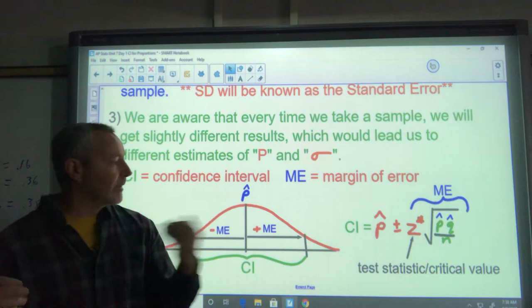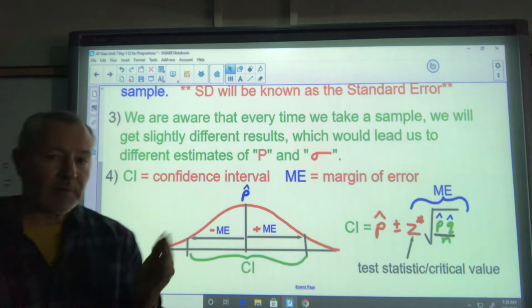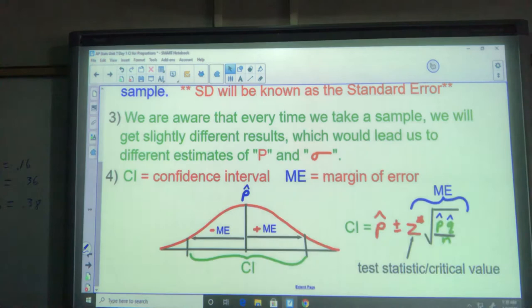That gives us an interval and we say, in this case, we're going to do our problem at a 95% confidence level. So we'll say we're 95% confident the true proportion lies somewhere between these two values.